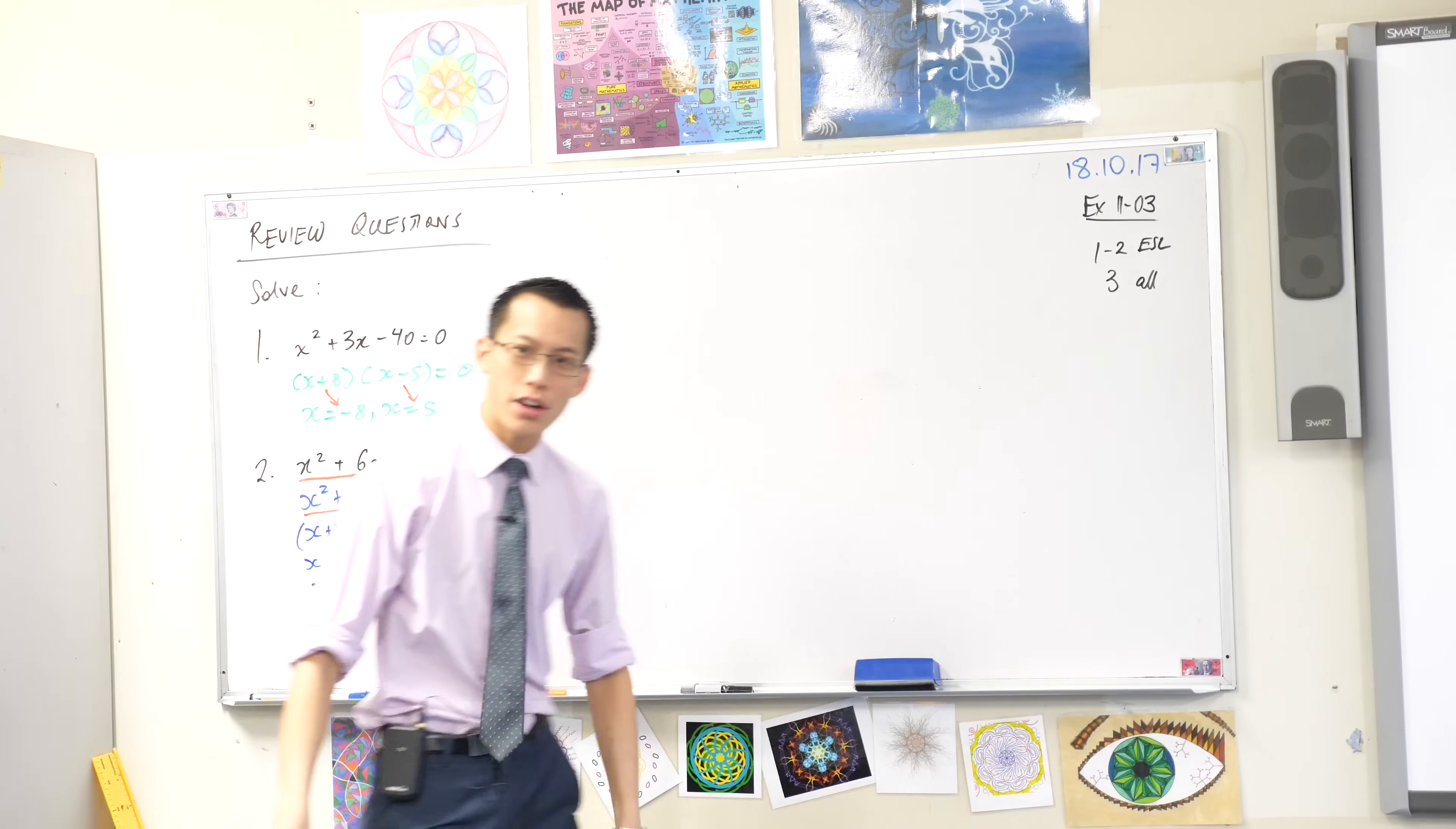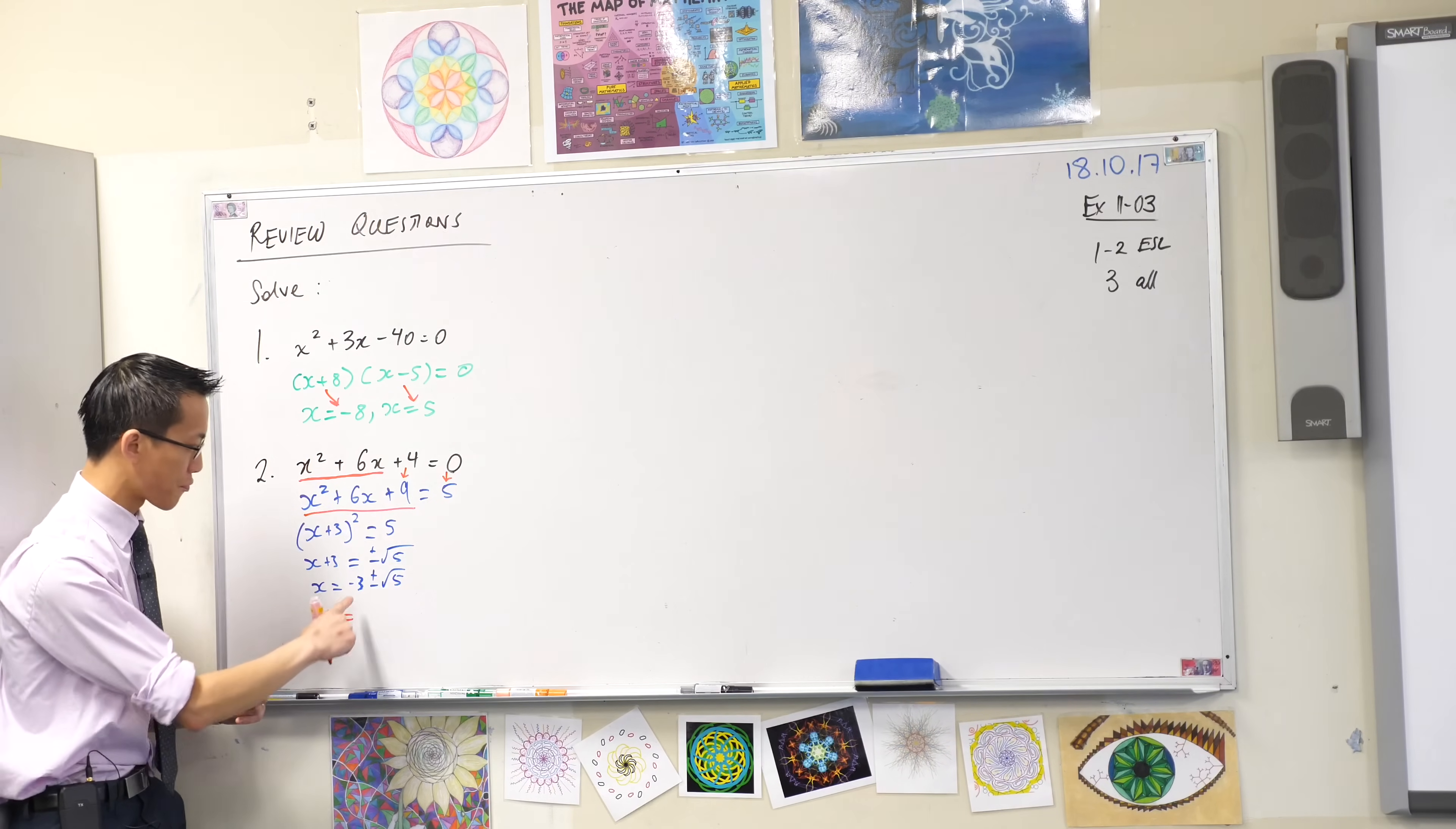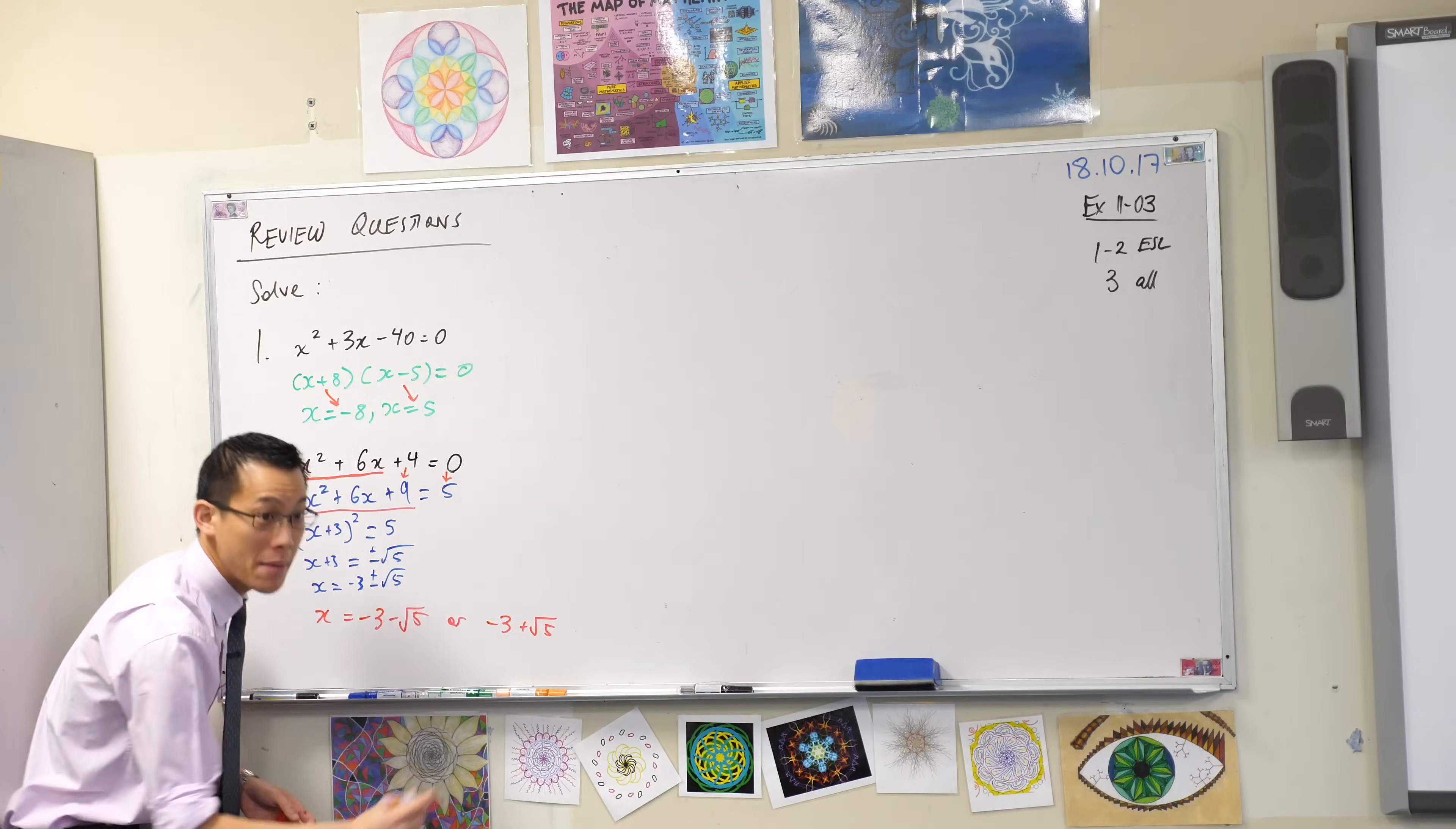Now Andrew asked a great question earlier which was, do we just leave it like that? Or do we remember the fact that actually this is shorthand for two numbers, right? And you might want to just for the sake of illustration write with me: this is short for minus 3 minus root 5. That's one of the answers. And then the other answer is minus 3 plus root 5. That's why there's a plus or minus there. So this is actually what we mean.